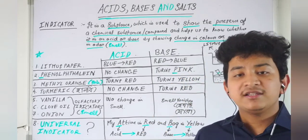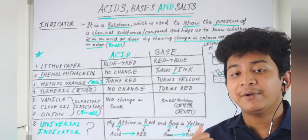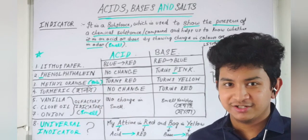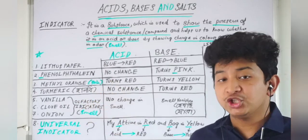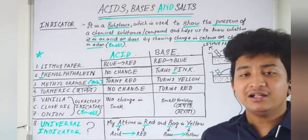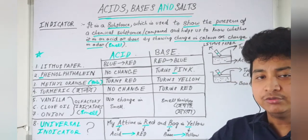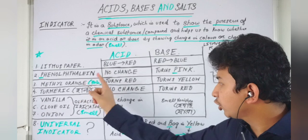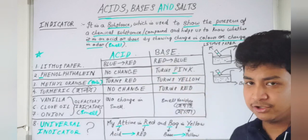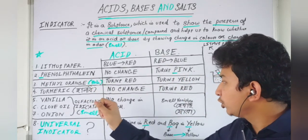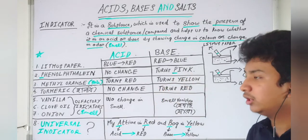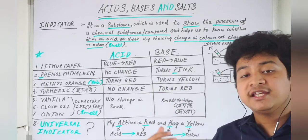The third number indicator is methyl orange. Methyl orange is an orange color solution. When this solution is added to an acidic solution, the orange color turns red. Similarly, when methyl orange colorless solution is added to a basic solution, it turns yellow.